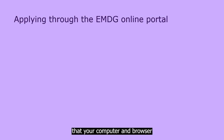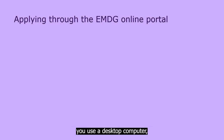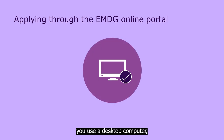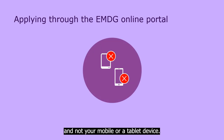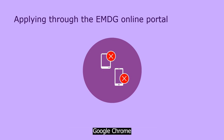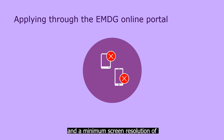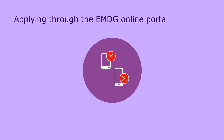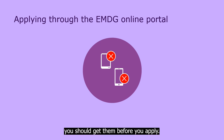For the best user experience in our portal, check in advance that your computer and browser meet our technical specifications. We recommend you use a desktop computer and not your mobile or a tablet device. Make sure you've got an up-to-date Google Chrome or Microsoft Edge internet browser, and a minimum screen resolution of 1280 by 800. If you don't have any of those, you should get them before you apply.